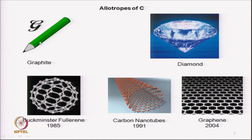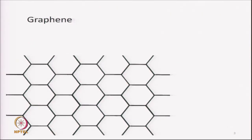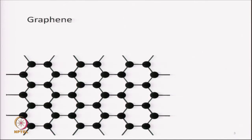Graphite is quite related to graphene, so we will take up the structure of graphite in this video. Let us recall the structure of graphene. We saw that the structure of graphene is based on tiling of hexagons. If we look at this hexagonal tiling and put a carbon atom at each of the vertices, what we get is the structure of graphene.